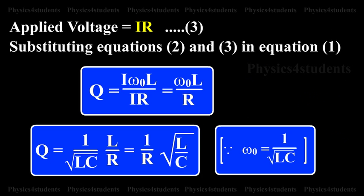Q is equal to I omega 0 L divided by IR, which is equal to omega 0 L divided by R.